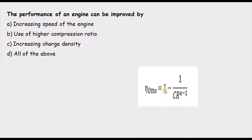Use of higher compression ratio: the formula for efficiency of an Otto cycle is given by 1 minus a term that has the compression ratio in the denominator. When we increase the compression ratio, that term becomes smaller and the Otto cycle efficiency increases. Similarly for the diesel cycle, the compression ratio is in the denominator, so increasing compression ratio increases power output and improves performance.